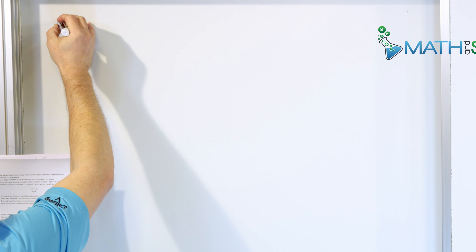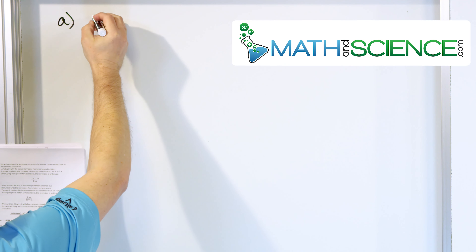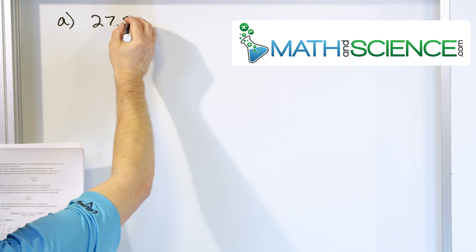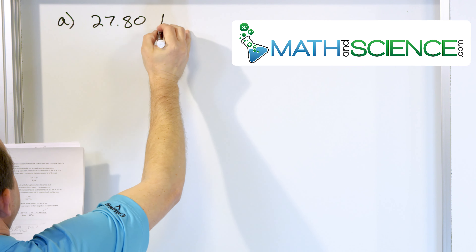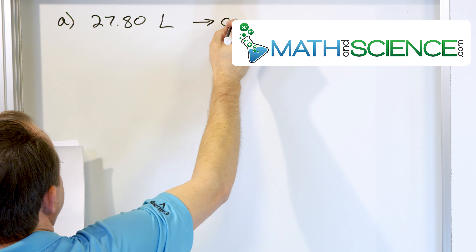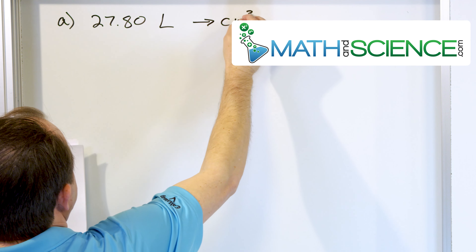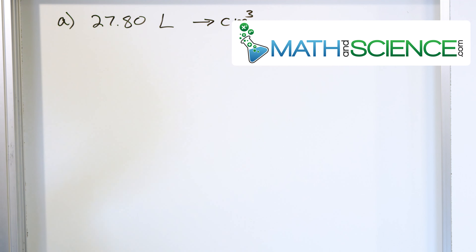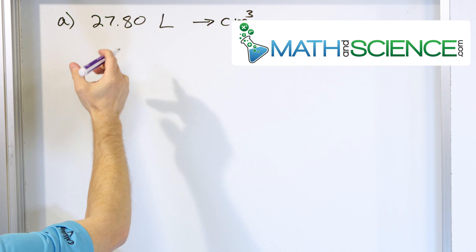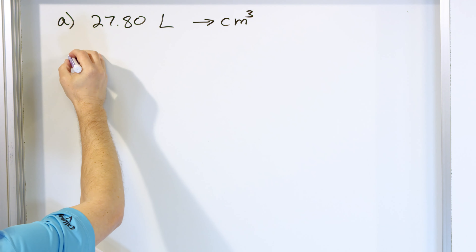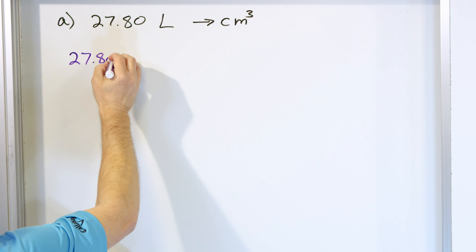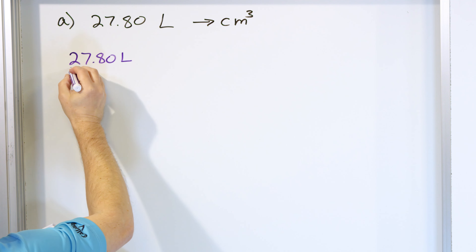The first problem is the following: let's convert 27.80 liters, and we're going to convert that into cubic centimeters. So as always, what we do is we write down what we know, what we're given — 27.80, and that's liters.